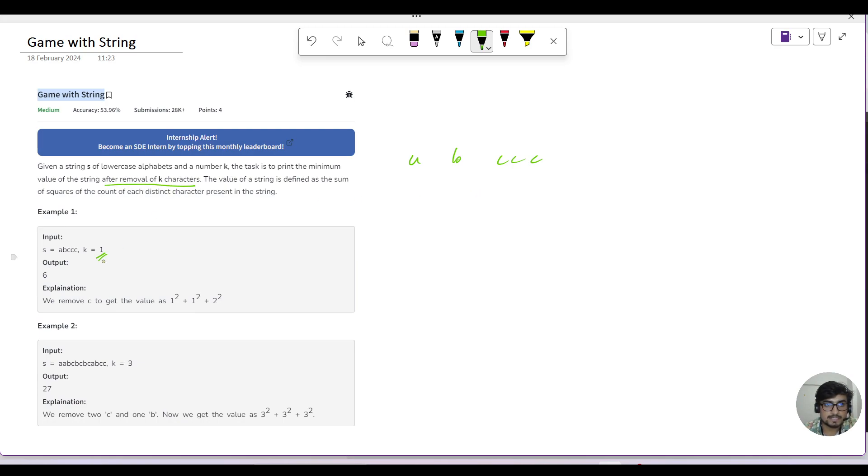After the removal of k characters, so if k equals to 1, we can remove one character. So they have removed this character C and you get the counts of all the distinct characters. So count of A is 1, count of B is 2, count of C is 2. And you return the square of all these numbers which will give you 6. And the task is to print the minimum of such value of the square of these values.